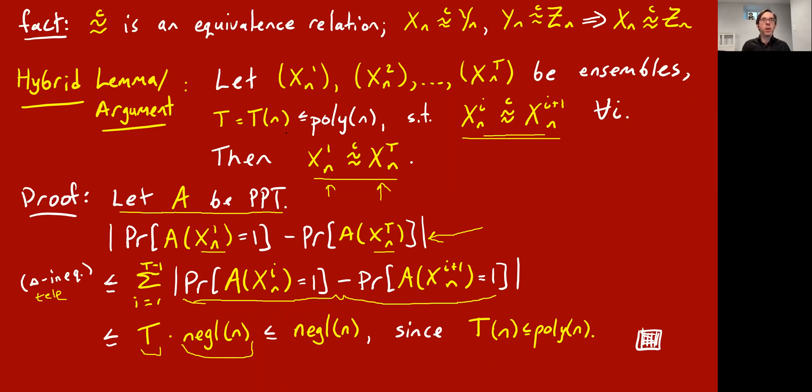And so now our assumption is that the adjacent ones, XI and XI plus 1, are computationally indistinguishable. So that this quantity is a function of N is at most some negligible function. And we only have T of them. And we are assuming T is at most a polynomial in N. So we have a polynomial in N, a fixed polynomial in N, like N squared, times a negligible function. And we're just saying, well, that's still a negligible function. This is a property and convenience of this terminology, negligible function. If some exponentially small quantity, you multiply it by N squared, it's still exponentially small. Or now replace those words with negligible. It just means you go to zero faster than any polynomial and you're in good shape. Okay, so that's a key tool that's used a lot in cryptography.